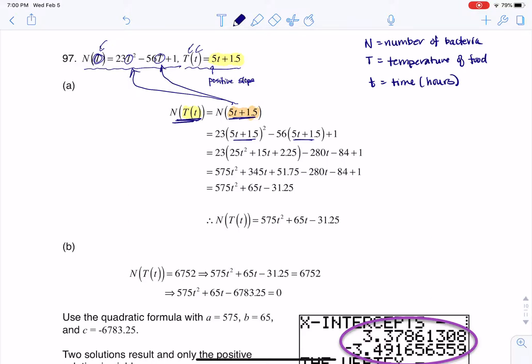And now it becomes just a really good time of foiling everything out and collecting like terms. So once I foil everything out and collect like terms, here is my function that I've been asked to find.